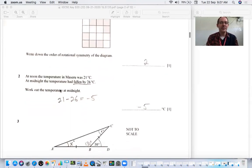Number two, at noon the temperature in Masaru is 21 degrees Celsius. At midnight it had fallen by 26 degrees, so you subtract and you end up with negative 5 degrees Celsius.